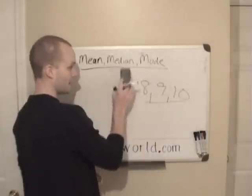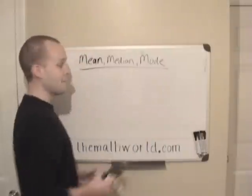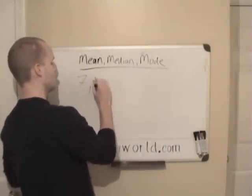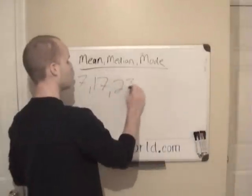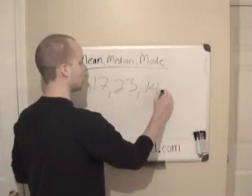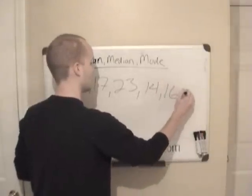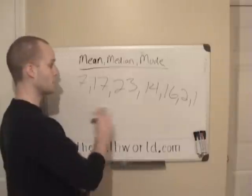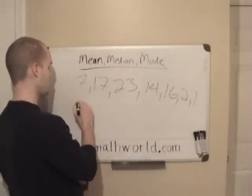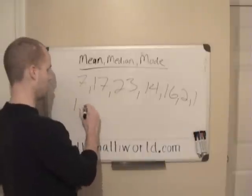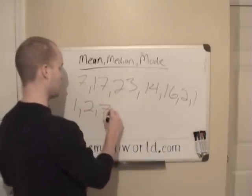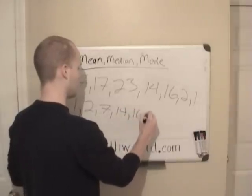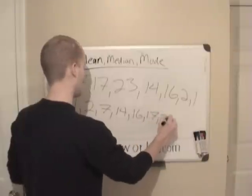When you're finding the median, they may not give you the numbers in order. So they may give you 7, 17, 23, 14, 16, 2, and 1. The first thing you want to do is put these numbers in order: 1, 2, 7, 14, 16, 17, 23.